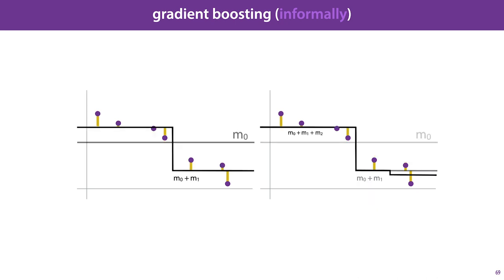This combined model has new residuals of its own, shown on the left, and we can train a new model M2 to predict these residuals. We add that to the ensemble, which gives us another model with even smaller residuals, and so on.